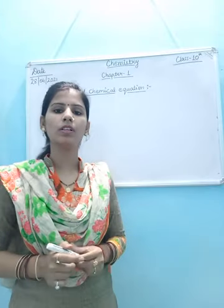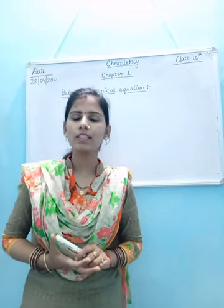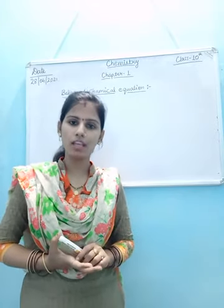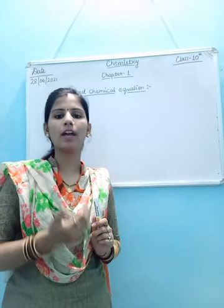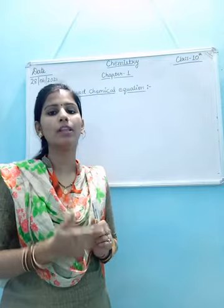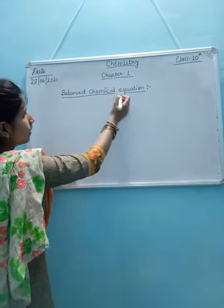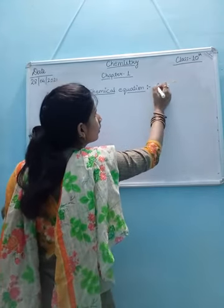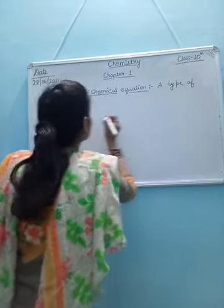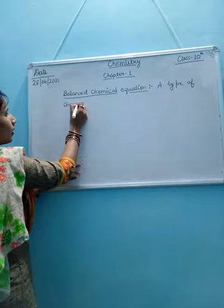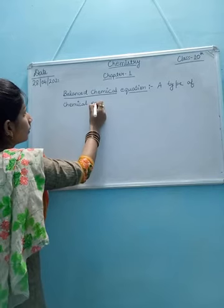We know about chemical equations, but what is a balanced chemical equation? A balanced chemical equation is a type of equation in which both sides — the left-hand side and the right-hand side — have the same number of atoms of each element. The number of atoms present on the reactant side must be considered.